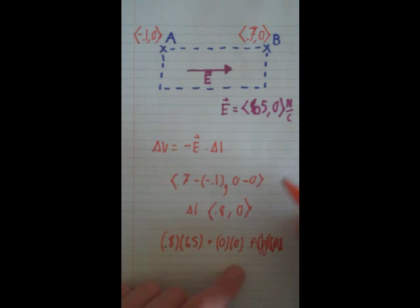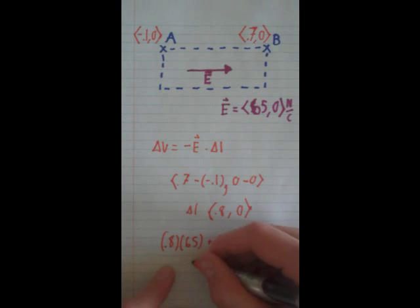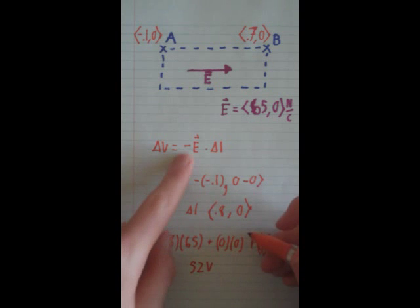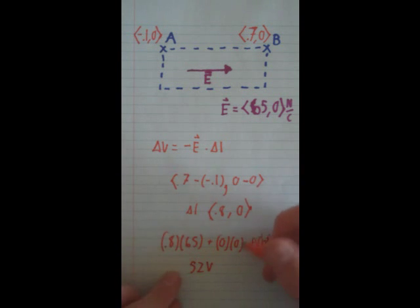When you add all that up, when you multiply these two together, you get 52 volts. And remember, you have to negative it. So this is going to be negative 52 volts.